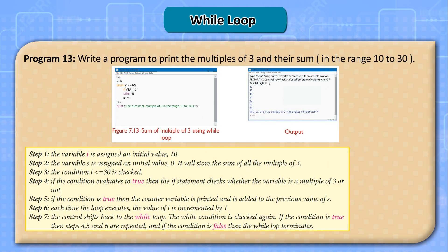Step 4: each time the loop executes, the value of i is incremented by 1. Step 5: control shifts back to the while loop; the condition is checked again. If true, steps 3 and 4 are repeated; if false, the while loop terminates. Program 13: write a program to print the multiples of 3 and their sum in the range 10 to 30. Step 1: variable i is assigned initial value 10. Step 2: variable s is assigned initial value 0 — it will store the sum of all multiples of 3. Step 3: the condition i less than or equal to 30 is checked.